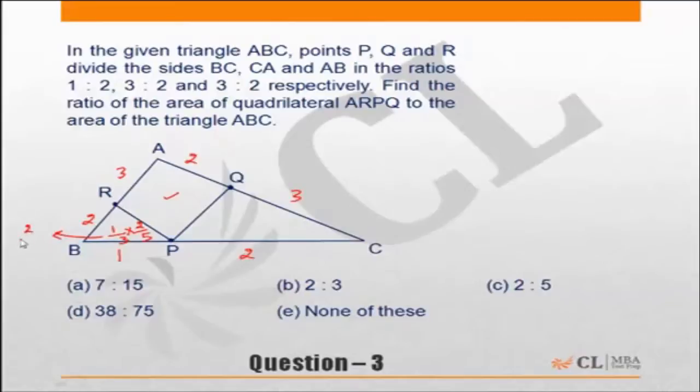Similarly, if I consider triangle CQP, it will be 3 the smaller side, the bigger side of AC of the bigger triangle. It is 2 bigger triangle, it will be 3.